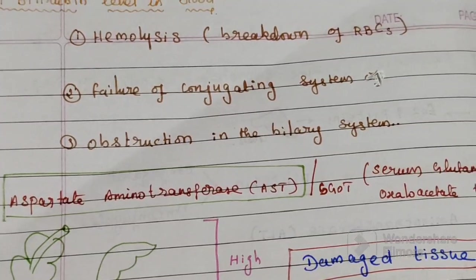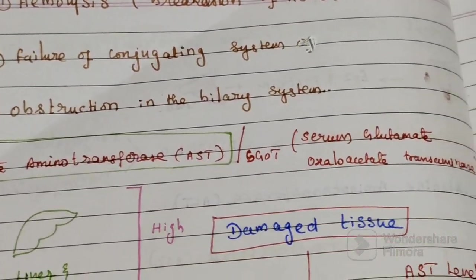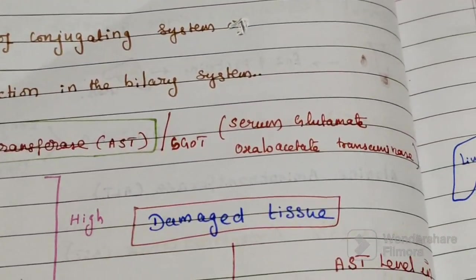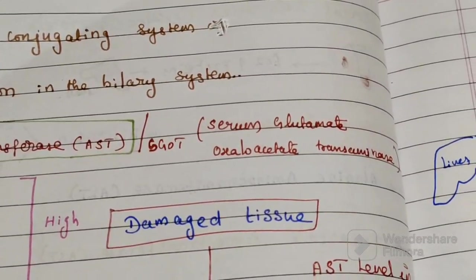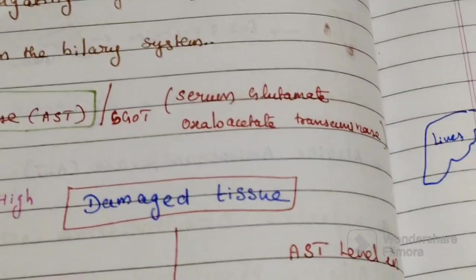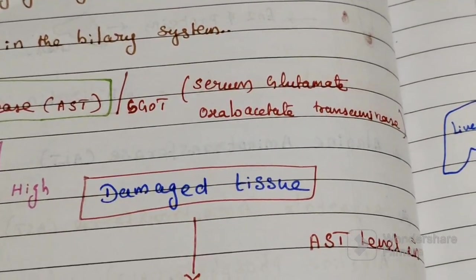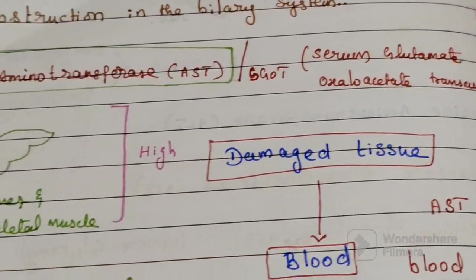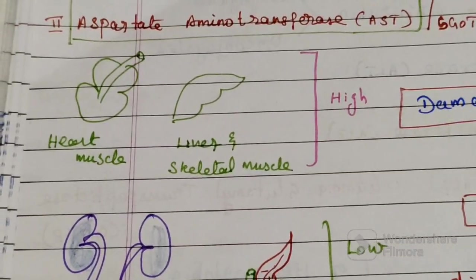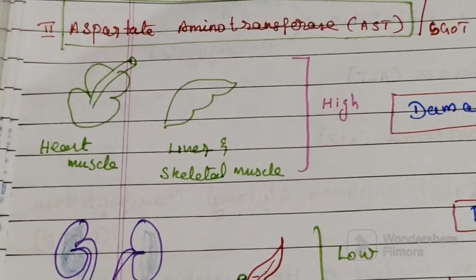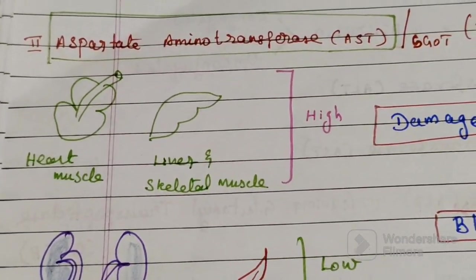Aspartate aminotransferase, or AST, was previously called serum glutamate oxaloacetate transaminase (SGOT). AST is found in high amounts in the heart, liver, and skeletal muscles, and in low amounts in the kidney, pancreas, and RBCs.